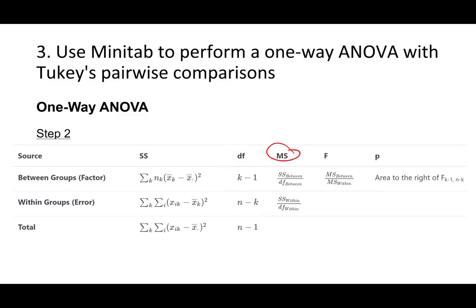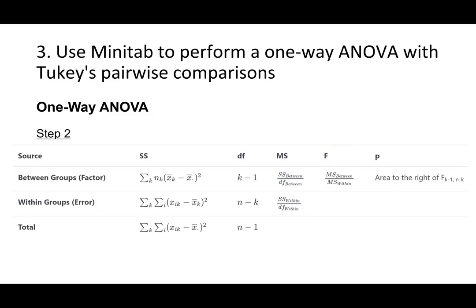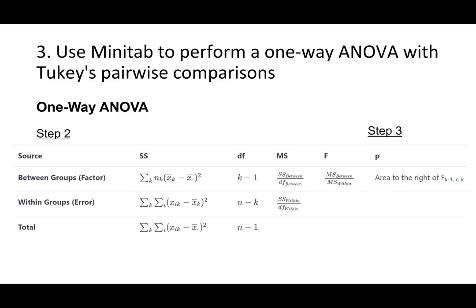MS, or mean squared, is a measure of the variance attributable to differences between groups and differences within groups. If we divide the variance between groups by the variance within groups, we get our F-test statistic — sometimes also called the F-ratio. The last column in the ANOVA source table is the p-value. Minitab Express makes the F distribution with k minus 1 and n minus k degrees of freedom and finds the area to the right of your test statistic, which is the p-value.